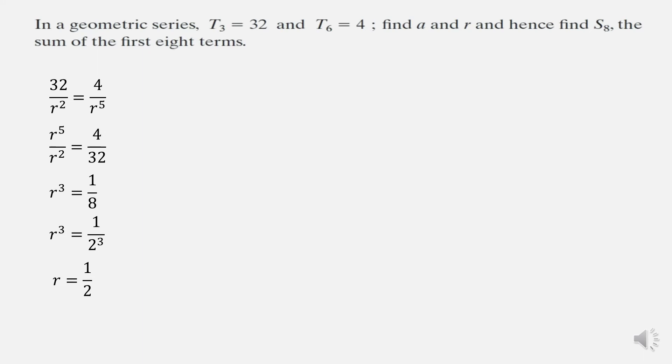Now that we know the value of r, we can return and find the value of a. So I'm using my t3: a by r to the power of 2 equals 32. Substituting in for what I now know is r, that's 1 over 2 squared. A over 4 equals 32. Multiplying both sides by 4, I get a equals 128. So now I've found a and r, I must now find s8, the sum of the first eight terms.